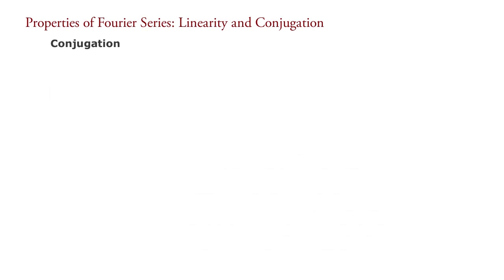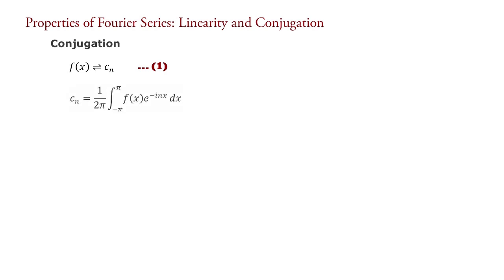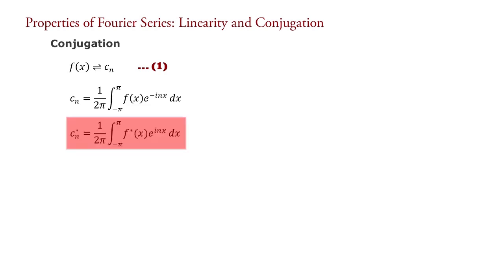Consider a Fourier signal f(x) and corresponding complex Fourier coefficient cn — that is f(x) corresponds to cn, say equation 1. The formula for complex Fourier coefficient cn is written accordingly. Taking the conjugate of this equation, we write cn star, expressing the conjugate of cn as cn star and that of f(x) as f(x) star. Also change the sign of the imaginary part, that is take e raised to inx in place of e raised to minus inx. Now in this equation, if we want to separate a part as a complex Fourier coefficient, it is necessary that e raised to inx has a negative sign with i, that is e raised to minus inx.